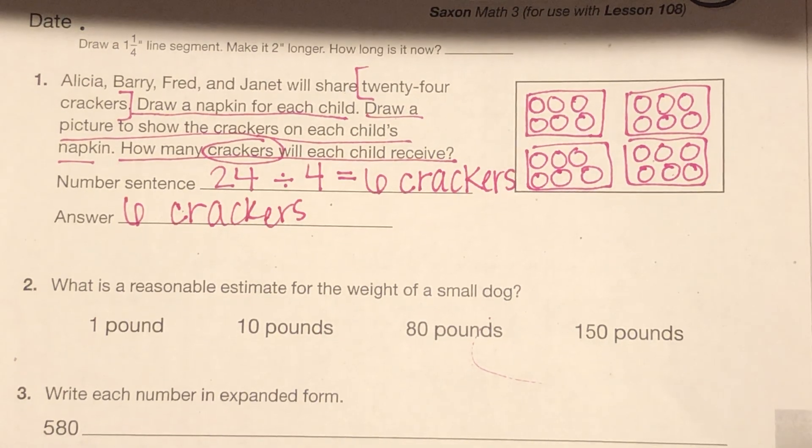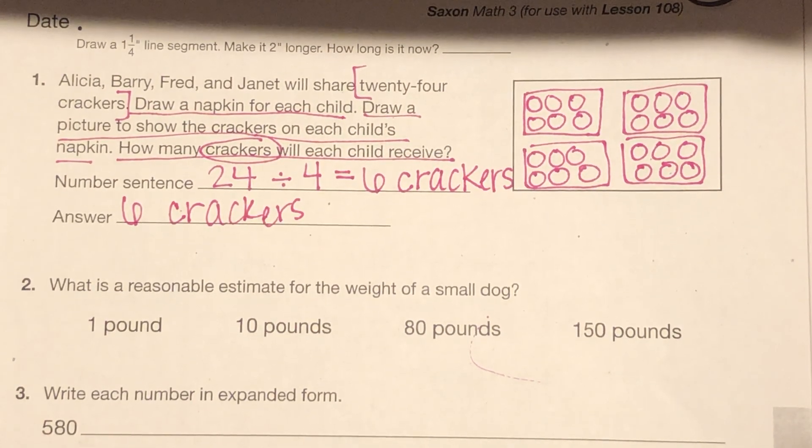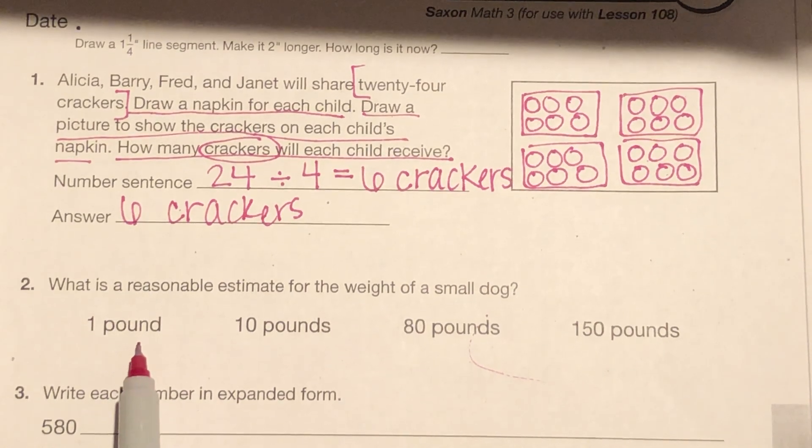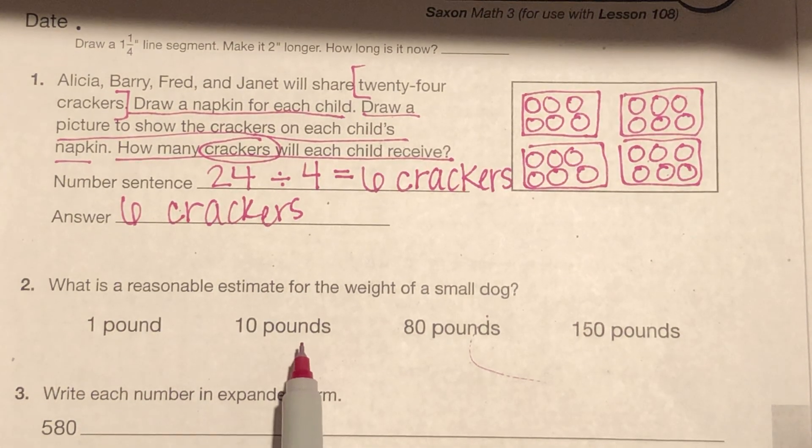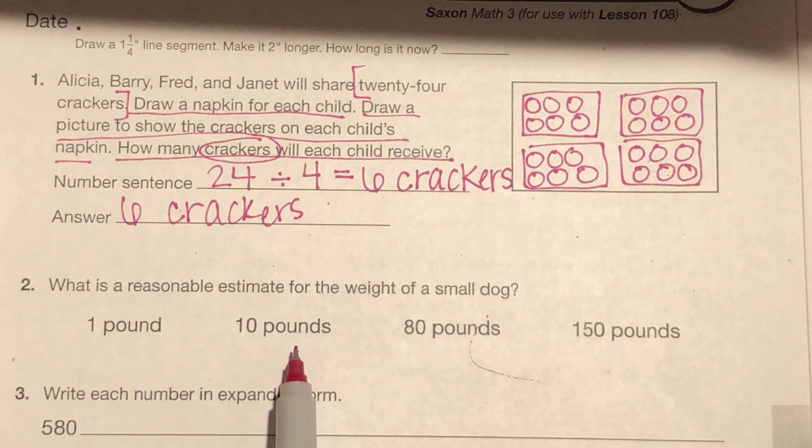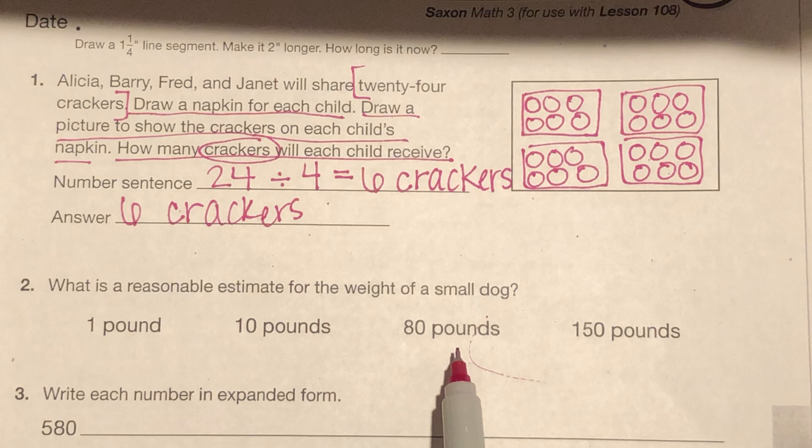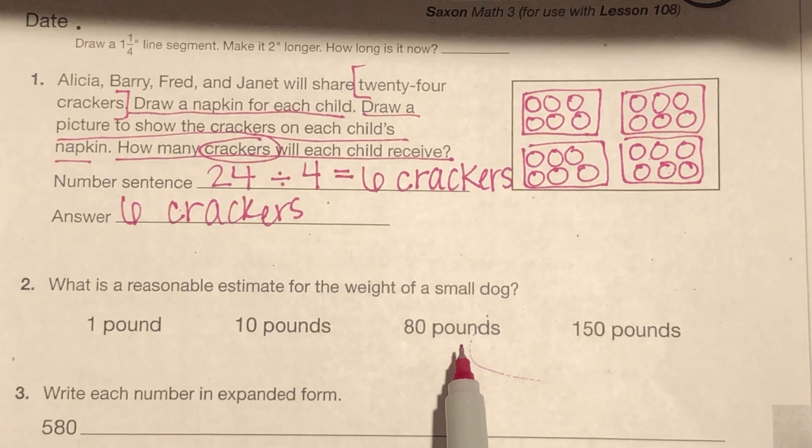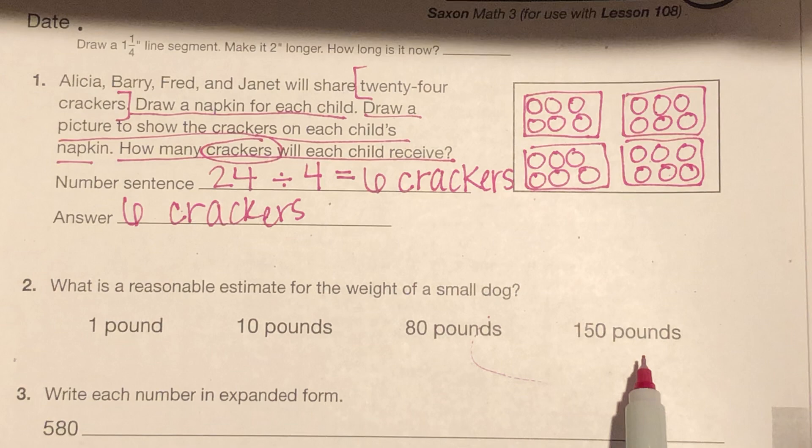Okay, what is a reasonable estimate for the weight of a small dog? I am going to reference a few things. So 1 pound is going to usually be, you could get like a pound of potatoes, a pound of sugar. 10 pounds is usually, well, Holly is 7 pounds. So I'll use that as a reference. 80 pounds, that would probably be around what some of you guys weigh. Maybe 80. I know Dawson weighs 56 pounds as some reference. And 150 pounds would probably be the size of an adult.